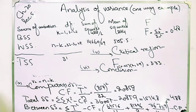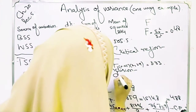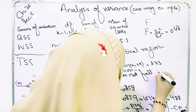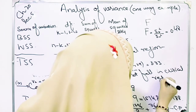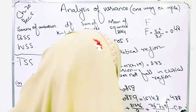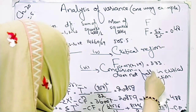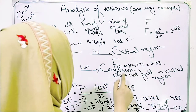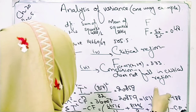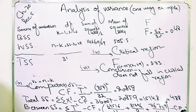Looking at the results, the value F equals 0.48 does not fall in the critical region - it lies in the acceptance region. So we accept H0 and reject H1, concluding that the means are equal. I hope you understand these questions. In the next video, we will describe questions where frequency is given. Allah Hafiz.